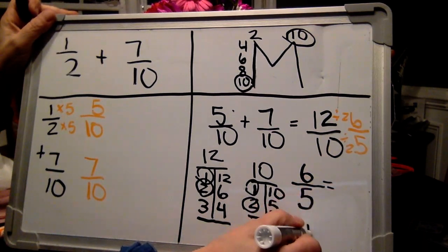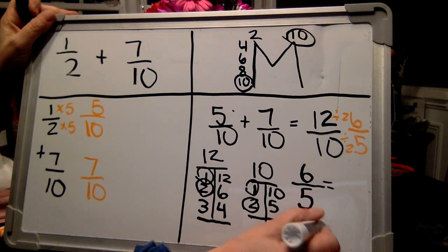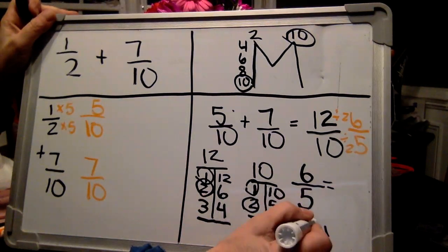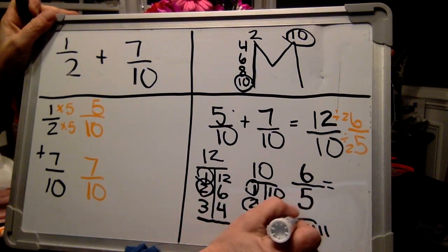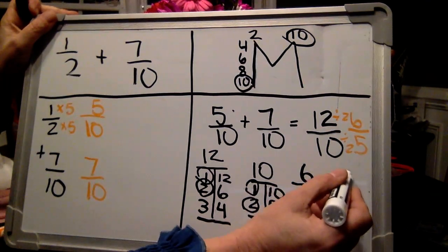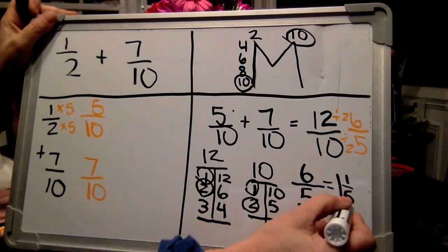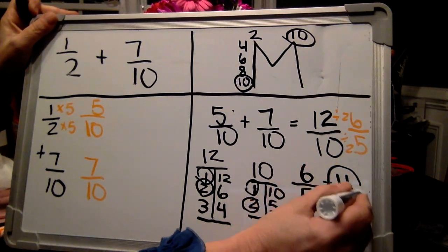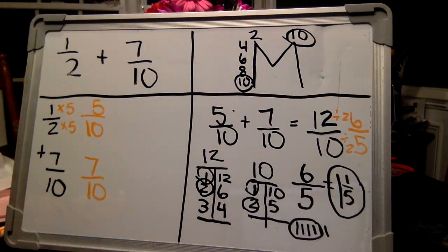One, two, three, four, five, six. I make one group of five, which is one whole. And I have one-fifth left. One and one-fifth is my final answer. Phew, that was a lot of work. All right. Let's get ready for you to try one now.